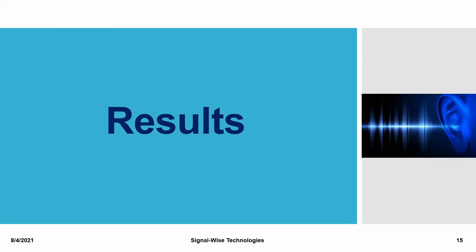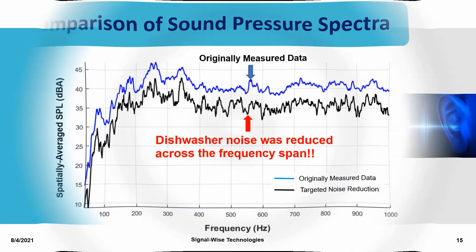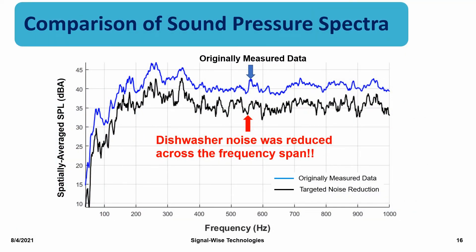Now, we will show you the result of this targeted control of dishwasher noise. Here is the comparison of the originally measured spatially averaged sound pressure level spectrum versus that after applying targeted noise control. Results show that the sound pressure levels are reduced across the entire frequency span, not just at the targeted resonance frequencies.